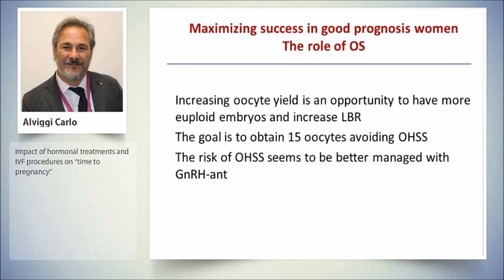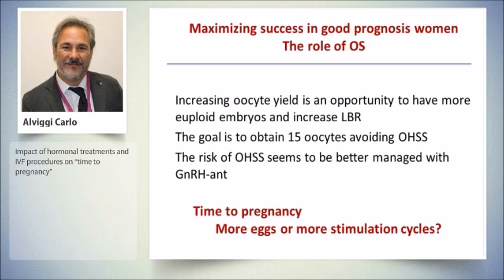If we want to look at time to pregnancy — meaning maximizing success in this patient — increasing oocyte yield is a very good opportunity to have more euploid embryos and increase live birth rate. The goal in fresh cycles is fifteen eggs, and we have to avoid the risk of ovarian hyperstimulation syndrome, which seems to be better managed by GnRH antagonists. But now, what about the idea of having more than fifteen eggs? Is it convenient? I'm not talking about classical PCOS — I'm talking about young patients with very good ovarian reserve.